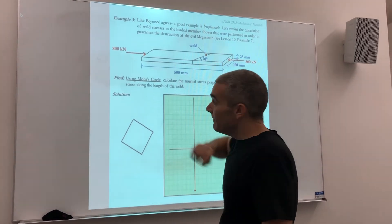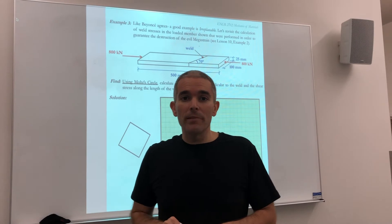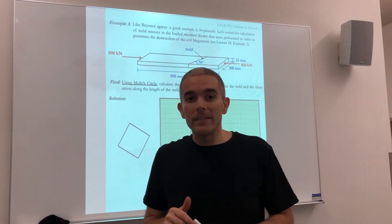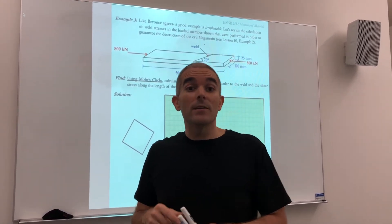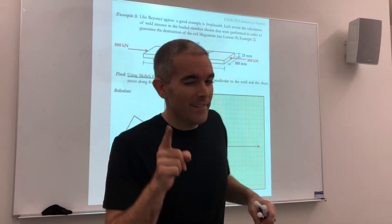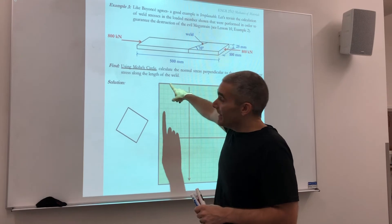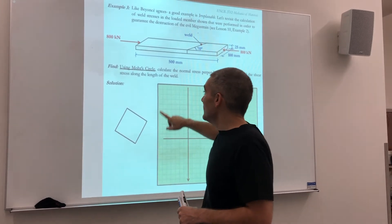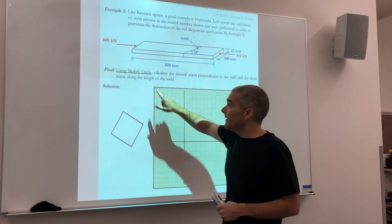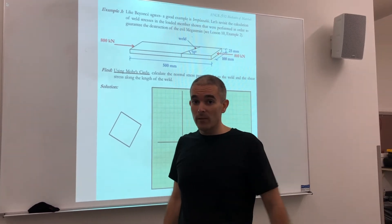If you recall, this is the same example that we worked in the previous class when we did stress transformation equations. So we should already know the right answers. I want to use Mohr's Circle now to solve for the normal stress perpendicular to the weld and the shear stress along the length of the weld.